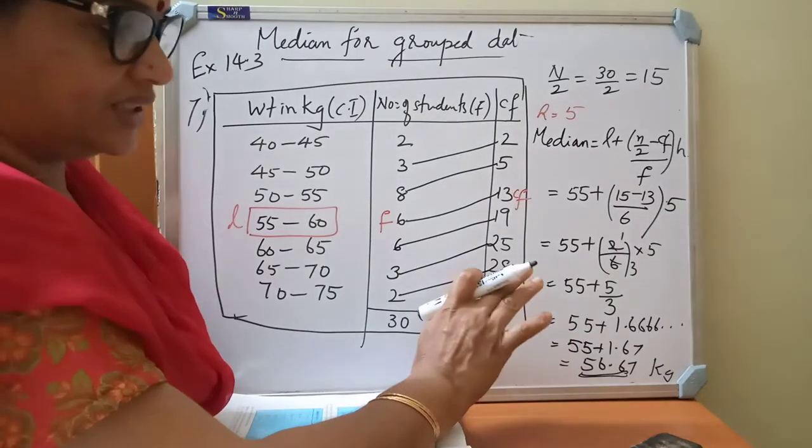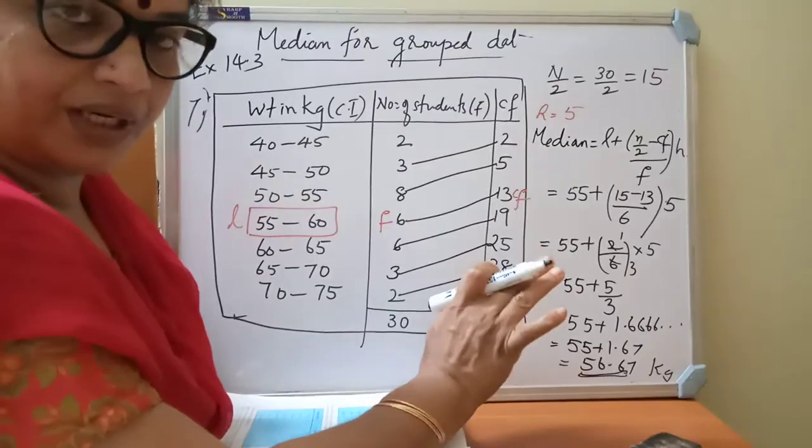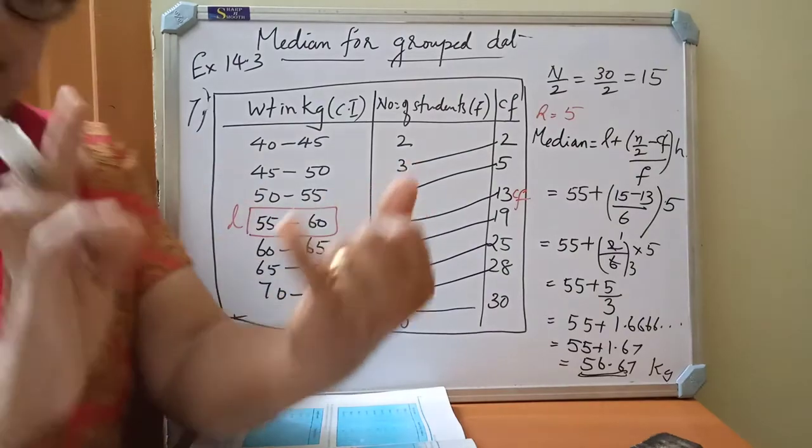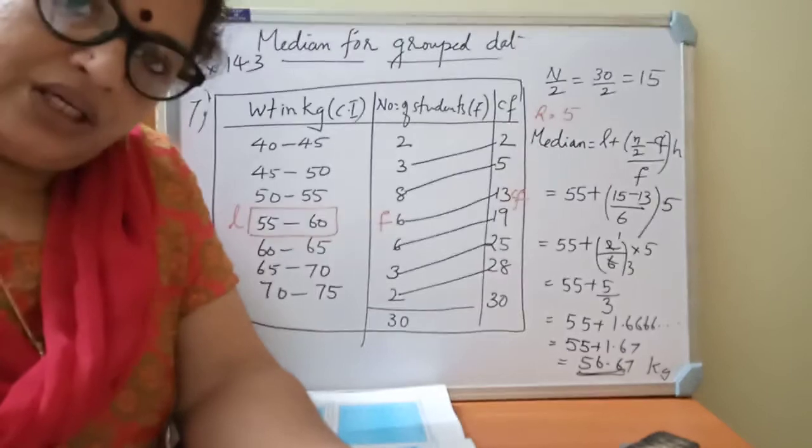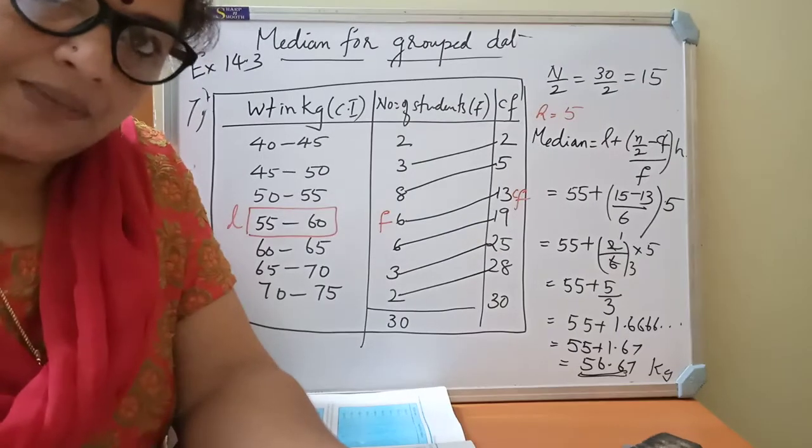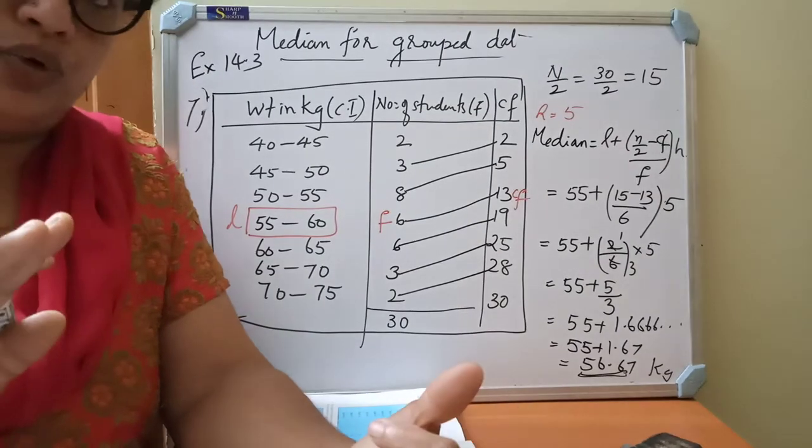Understood children? So median is very easy. What is the formula for median? Median equal to L plus N by 2 minus CF whole divided by F into H. Isn't it? So mean, median mode completed.